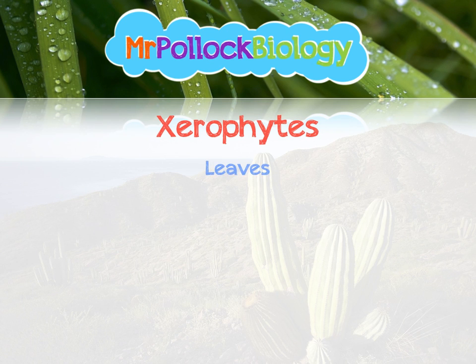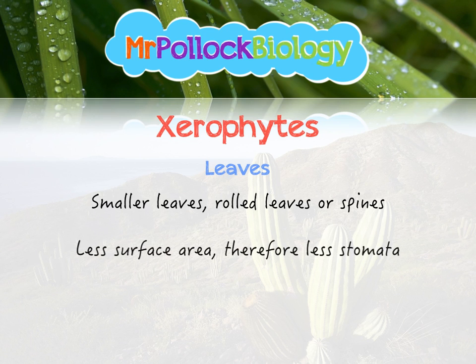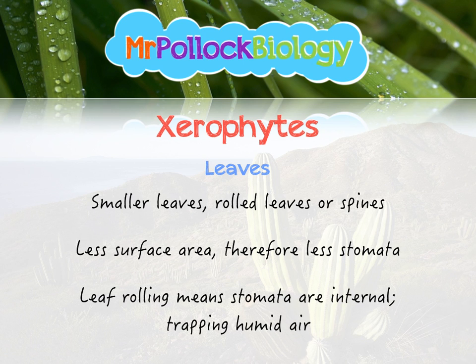The leaves themselves also show some interesting adaptations. Xerophytes often have small leaves, rolled leaves, or spines. This is all about reducing the surface area, giving fewer stomata. Leaf rolling means that stomata are internalized — trapped within the leaf itself — which means we've got humid air again, reducing the concentration gradient between the leaf and the environment, so less transpiration will occur.